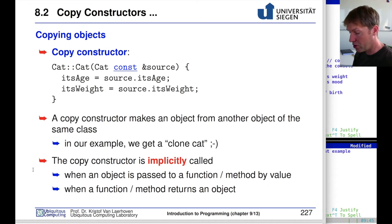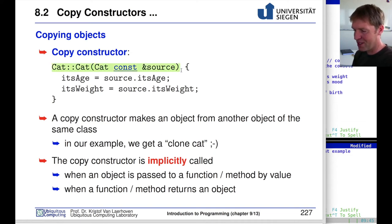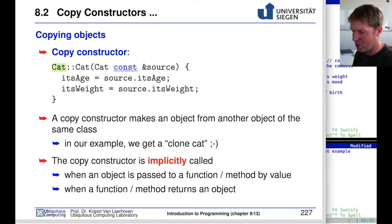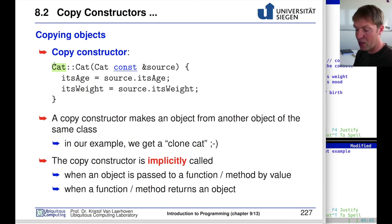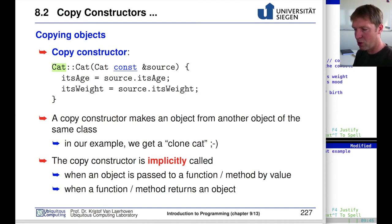The copy constructor is implicitly called — we don't have to call it explicitly in the code. Whenever you pass an object of type cat to a function, or when a function returns an object of type cat, the copy constructor is automatically invoked. Just as passing an integer to a function copies it into a second variable, the same happens for instances of a class.